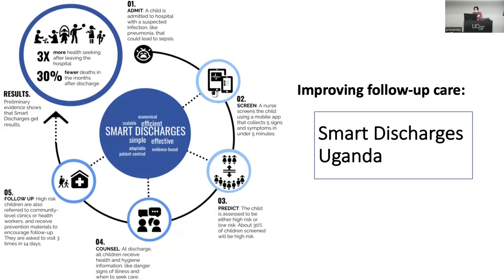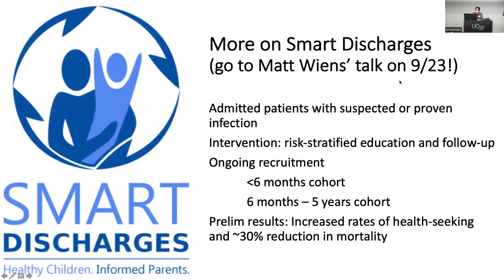Another aspect is improving follow-up care — the person leading that study is giving a separate talk. His project focuses on patients discharged from hospital: improving follow-up care, education, and linking them back so they don't have to be readmitted or die after discharge. Components include a risk prediction model, education and counseling, and linking to follow-up care. They're seeing that more people come back to care after discharge and there are many fewer deaths in the months after discharge. The project is expanding — it started with under-fives and now they're trying an older cohort from 5 to 12 given the remarkable effects.